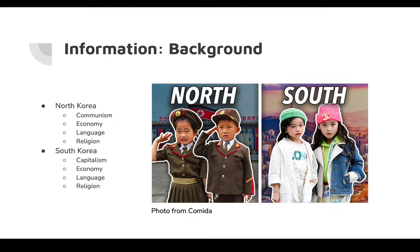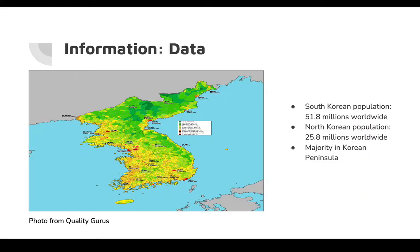Officially, South Korea and North Korea are both atheist states, and there are small communities of Buddhists and Christians. According to the website, the South Korean population is about 51 million worldwide in 2020. North Korean population is about 25 million worldwide in 2020. Most Koreans are distributed in the Korean Peninsula.